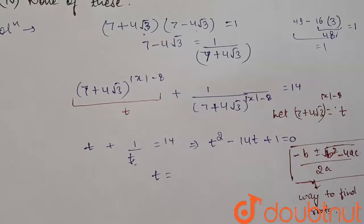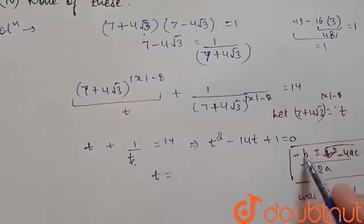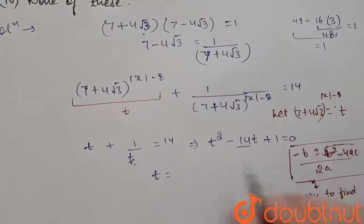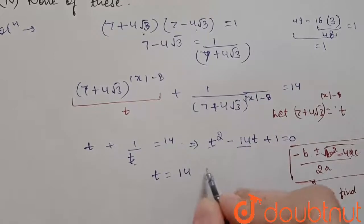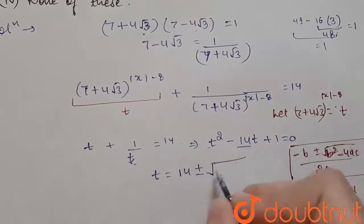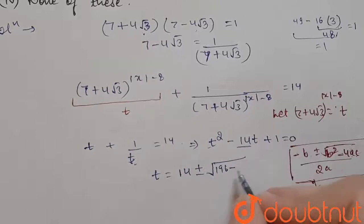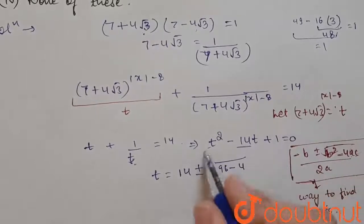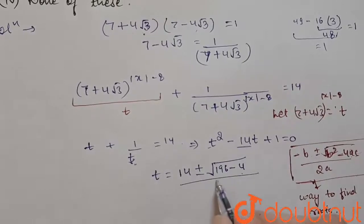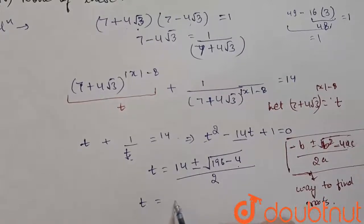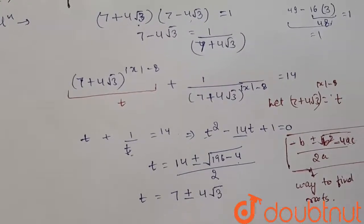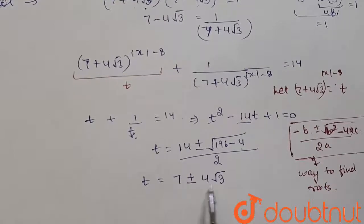Applying the formula with a = 1, b = −14, c = 1: t = (14 ± √(196 − 4)) / 2 = (14 ± √192) / 2. On solving, we get t = 7 ± 4√3. So the two values of t are 7 + 4√3 and 7 − 4√3.